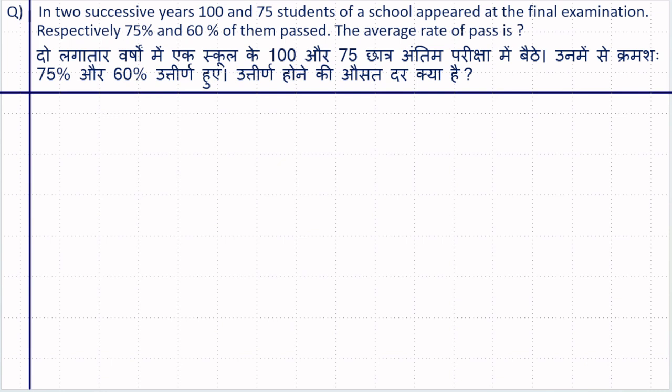In two successive years, 175 students of a school appeared at the final examination, with respectively 75% and 60% of them passed. The average rate of pass is to be determined.